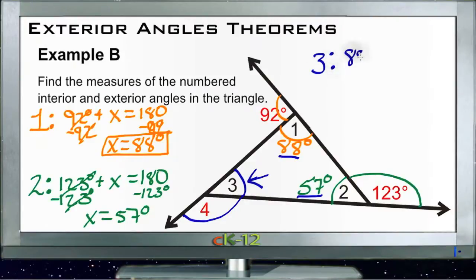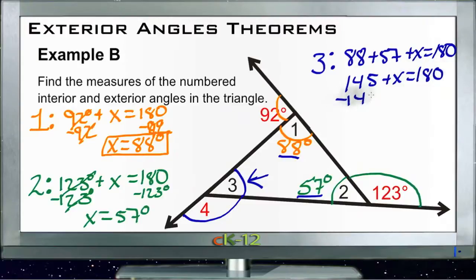So we have 88 degrees plus 57 degrees plus x equals 180. 88 and 57 is 145, so 145 plus x equals 180. Subtract 145 from each side, and we get x equals 35 degrees. So now we know that angle 3 is 35 degrees.